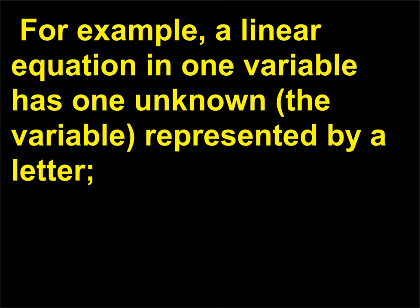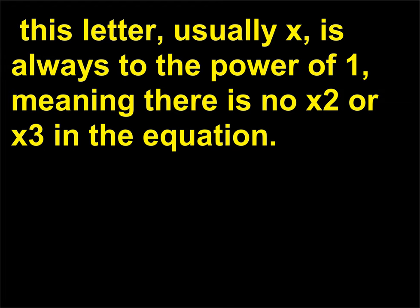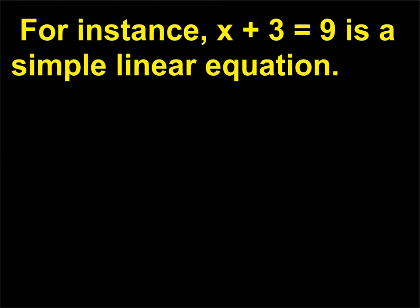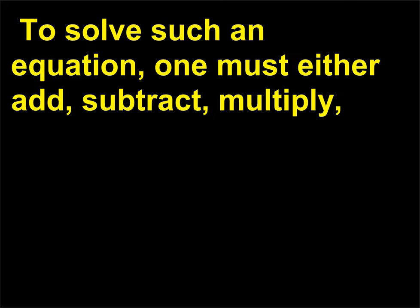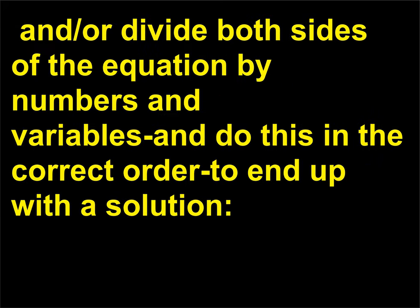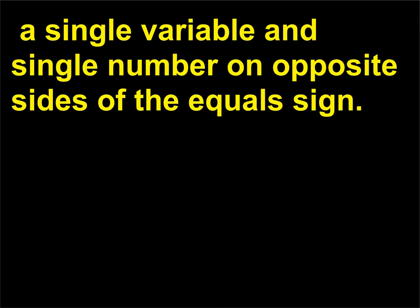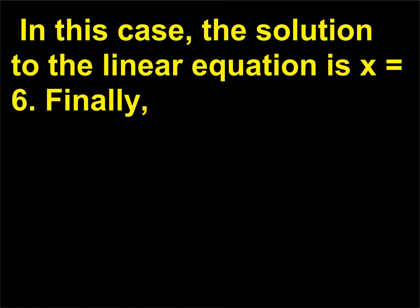This letter, usually x, is always to the power of 1, meaning there is no x² or x³ in the equation. For instance, x + 3 = 9 is a simple linear equation. To solve such an equation, one must either add, subtract, multiply, and/or divide both sides of the equation by numbers and variables in the correct order to end up with a solution — a single variable and single number on opposite sides of the equals sign. In this case, the solution to the linear equation is x equals 6.